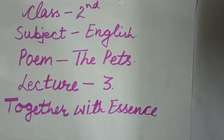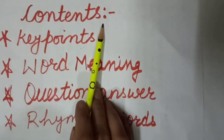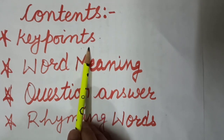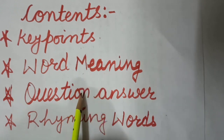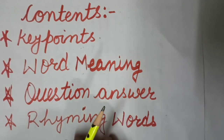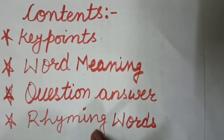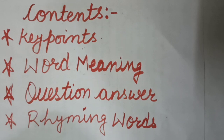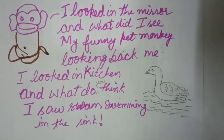The contents I am taking in this poem are: key points — I will explain the poem and tell you the key points. Then we will move to the word meanings. Then we will move to rhyming words, describing words, and also tell you how to frame new words with the help of different letters. So let's recite the poem.